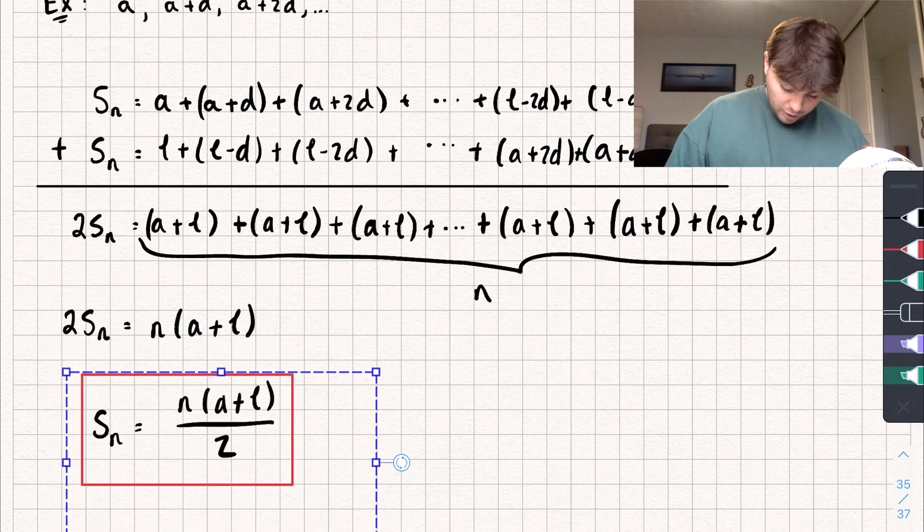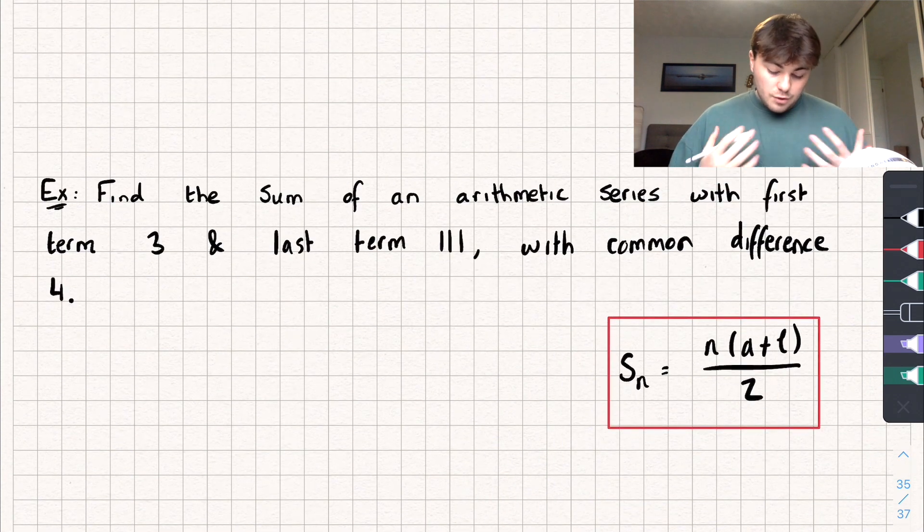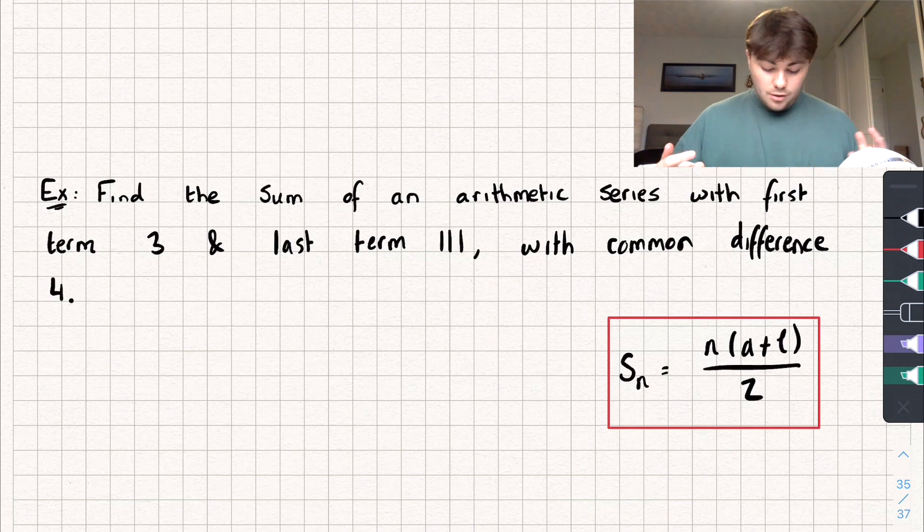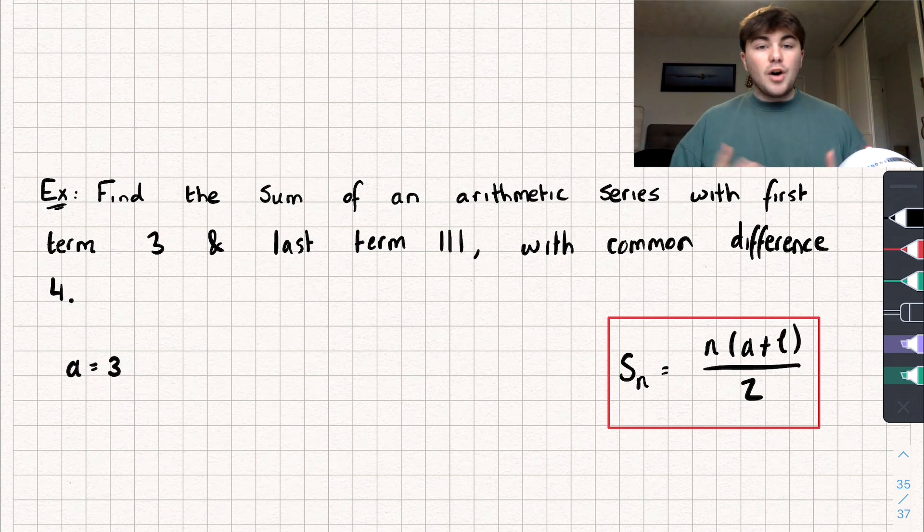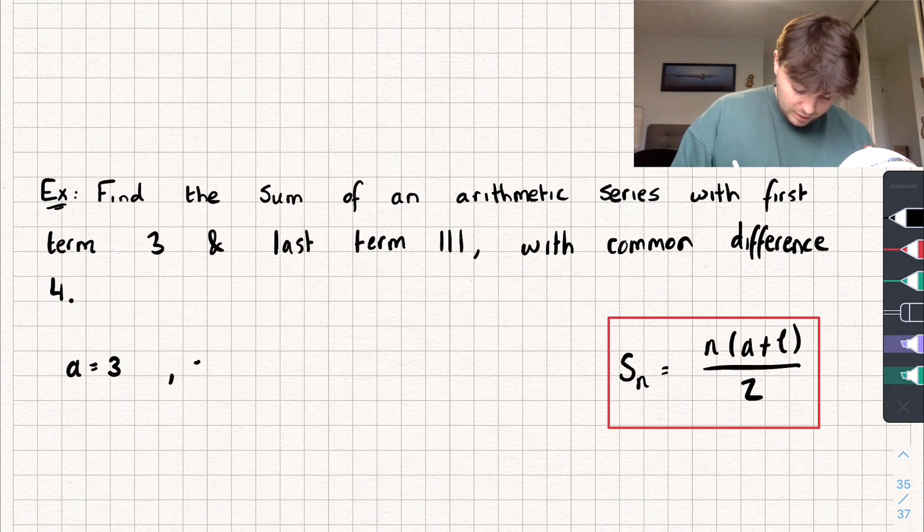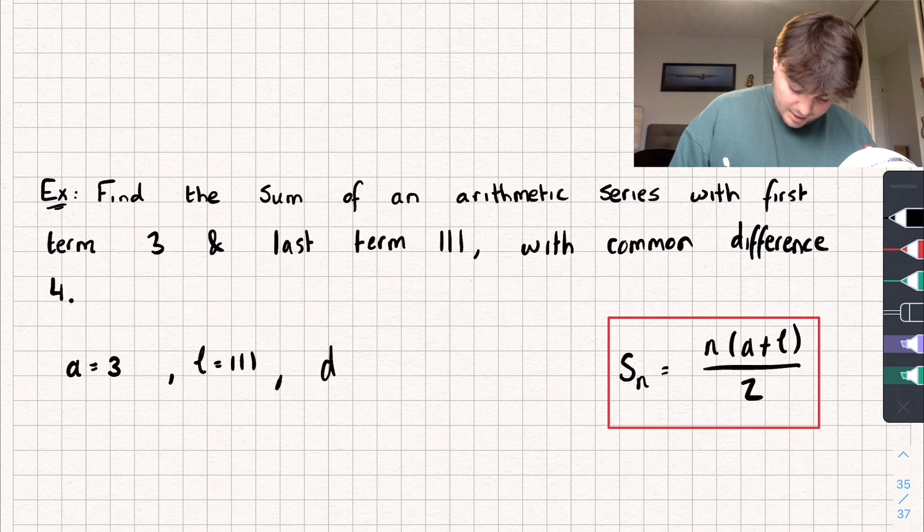So now what I'm going to do is bring this down here and we'll have a look at an example question. So we're told to find the sum of an arithmetic series with a first term A, so immediately I know A is equal to 3, and a last term of 111. So we've got the last term L is equal to 111. And we're given that the common difference is 4, so D is equal to 4.